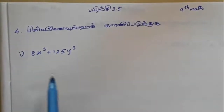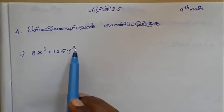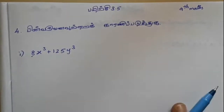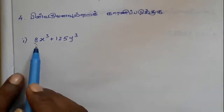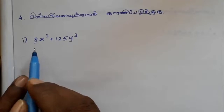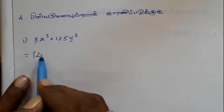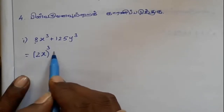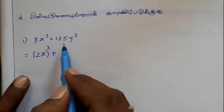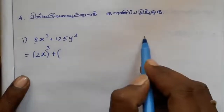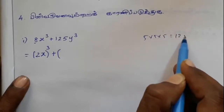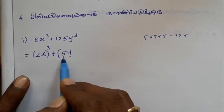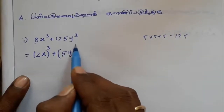Now let's see if you have a cube. If you have a cube, you can have a cube. There is a cube and a cube. If you have a cube, you can have a cube.